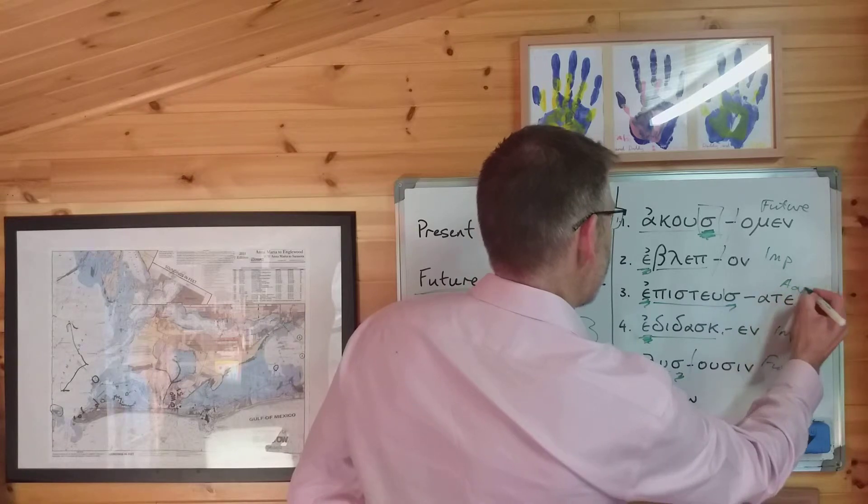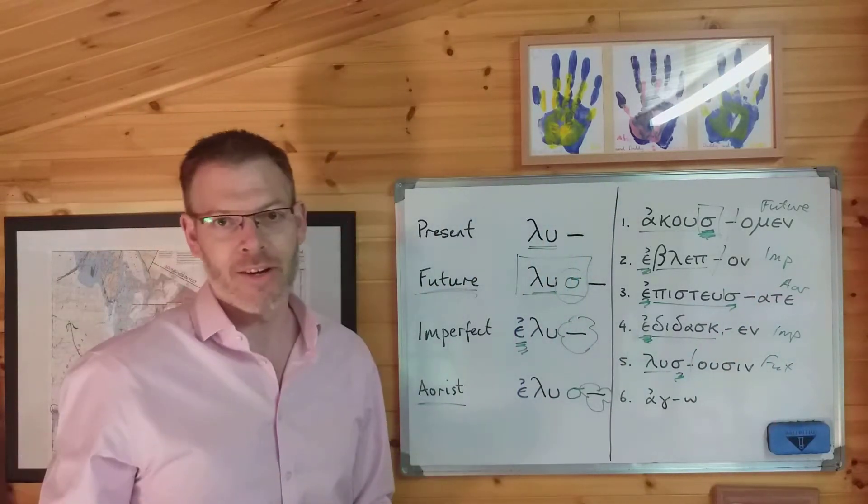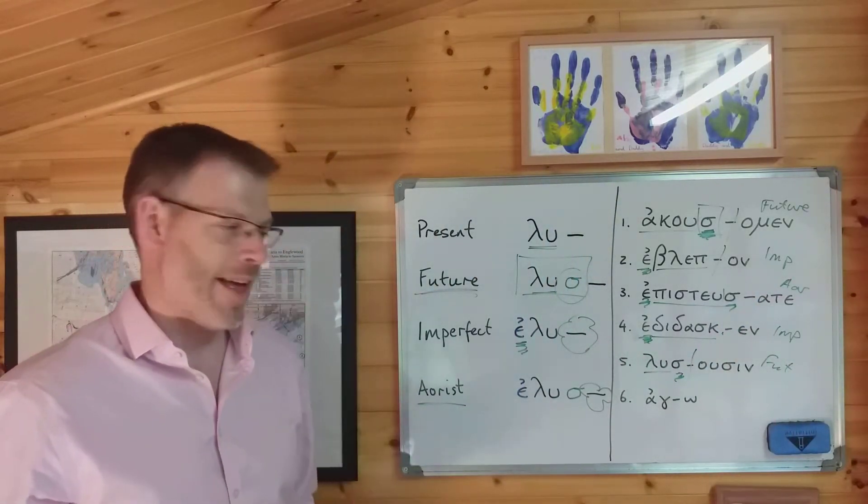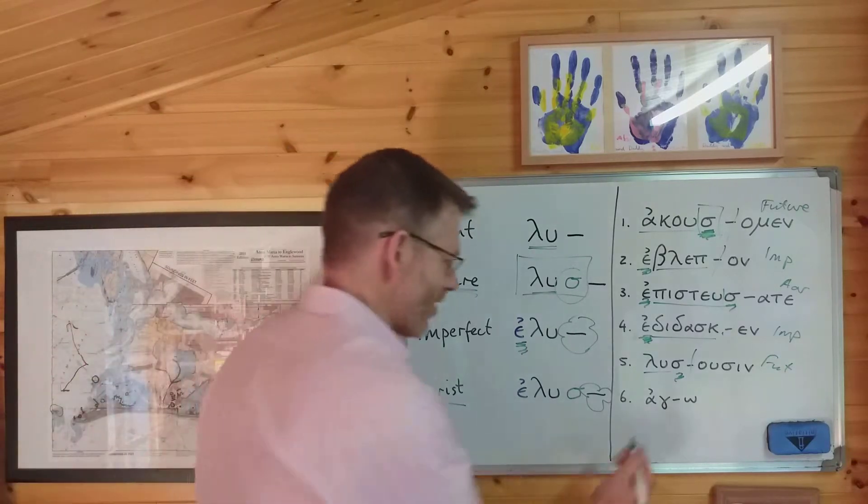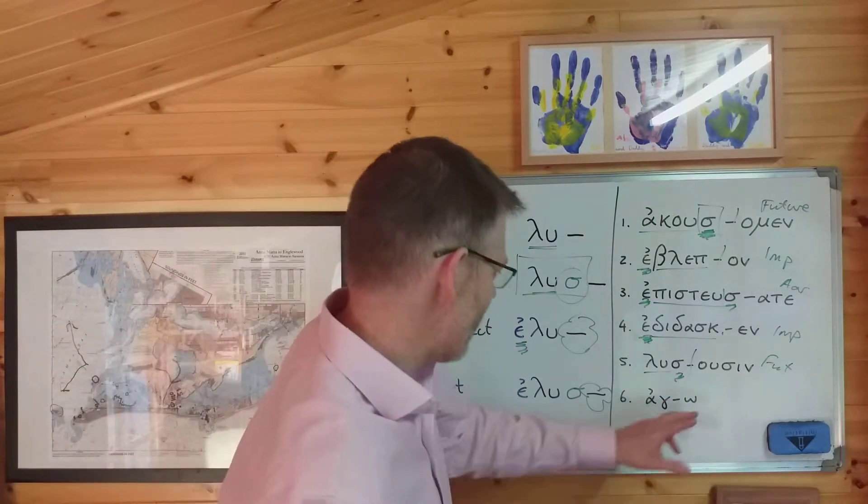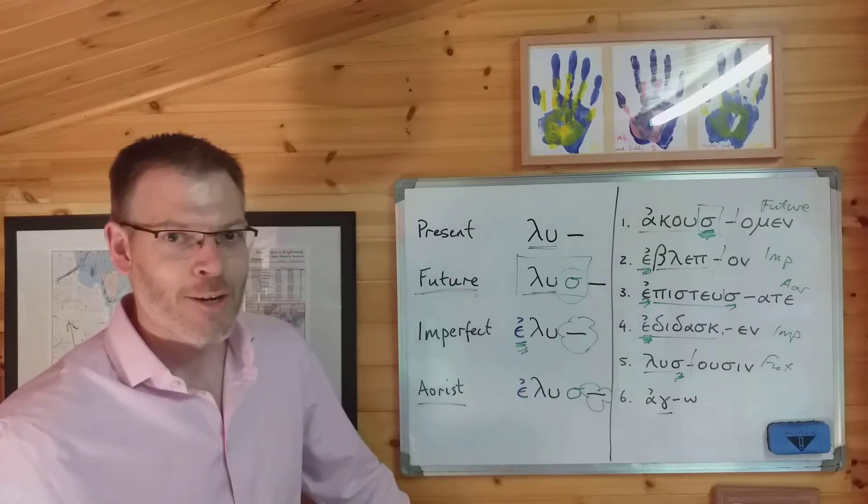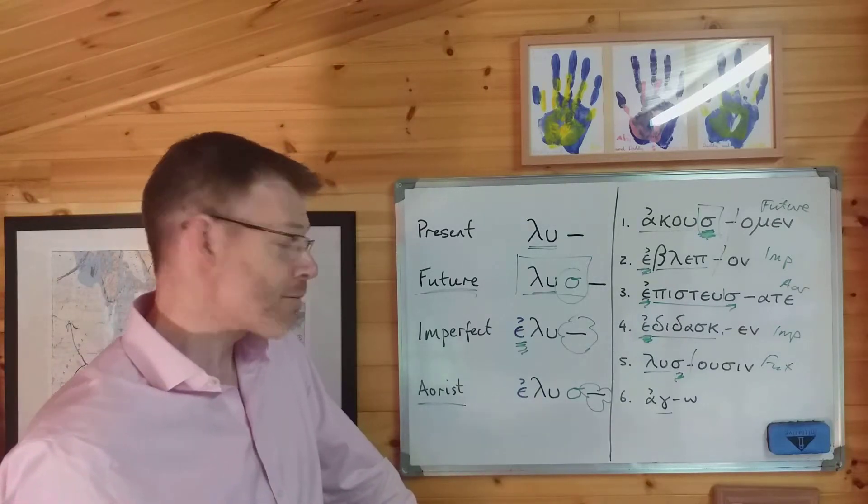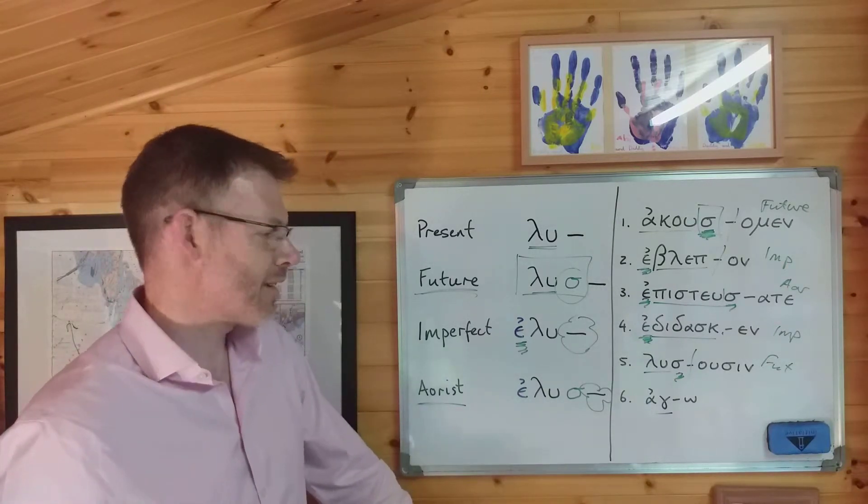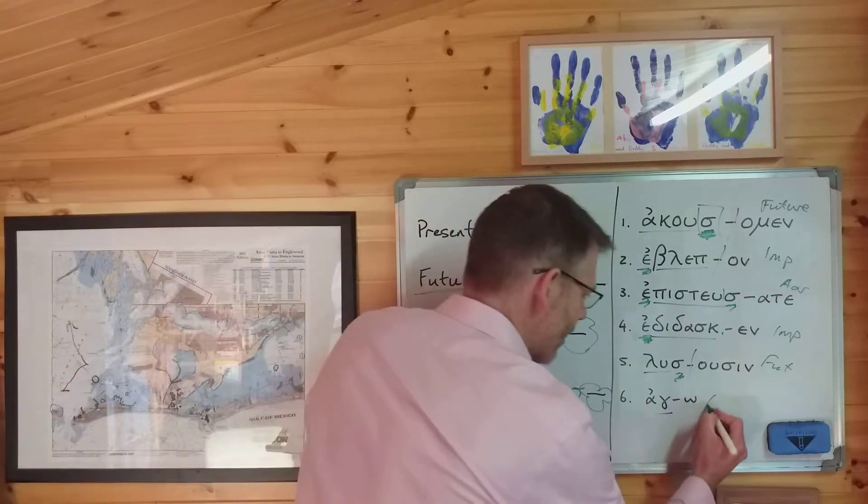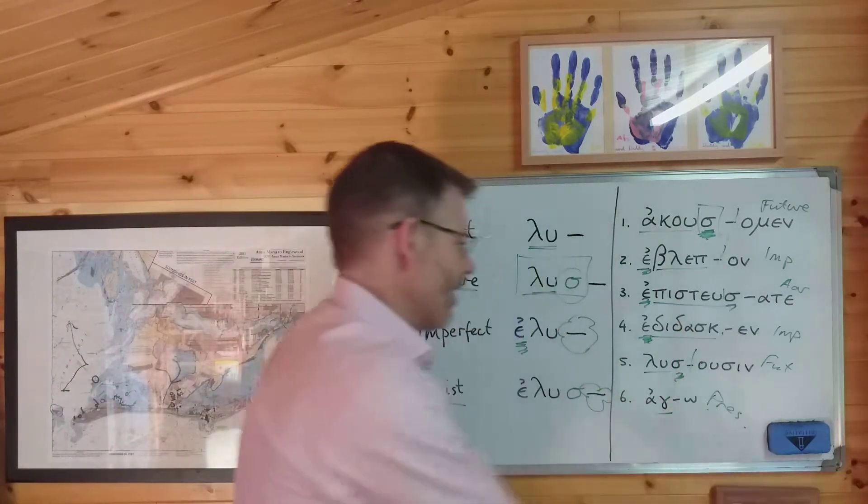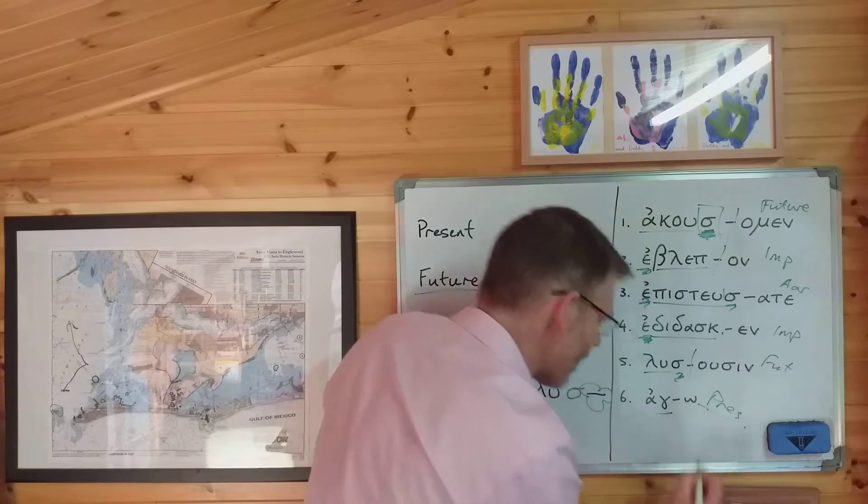And what about this one? Αγω. What's the stem there? Very straightforward. It's just αγ, isn't it? From αγω, meaning I lead or I bring. Epsilon augment? No. Sigma suffix? No. So this one, then, is in the present tense.